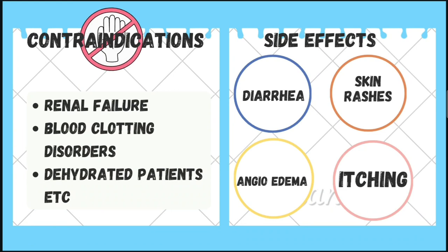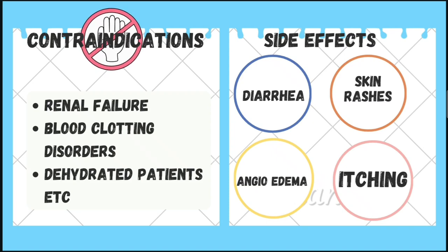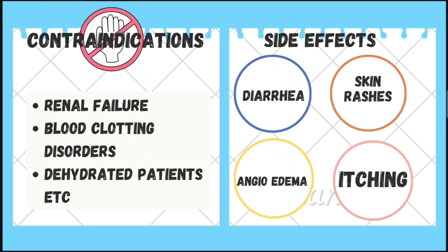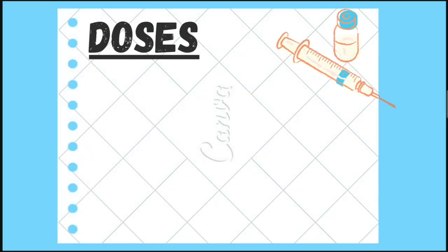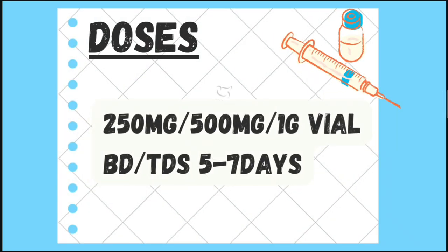Cephradine has the same contraindications and side effects as cephalexin and cefadroxil. Since it is given intravenously, the dose is 250 mg, 500 mg, or 1 gram, given BD or TDS for 5 to 7 days.